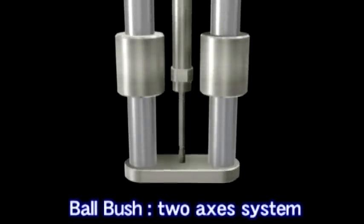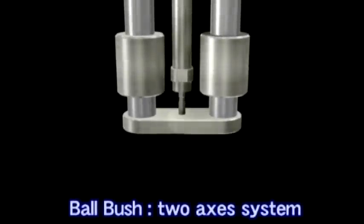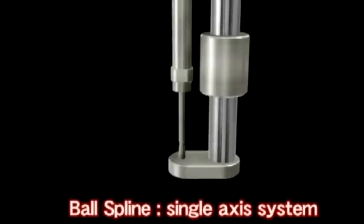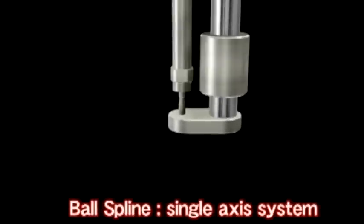With the unique structure of the NB ball spline, miniaturization of a device becomes possible from conventional multiple axis to a single axis.